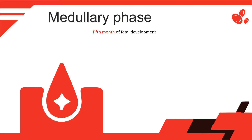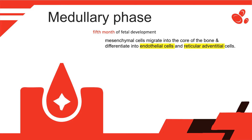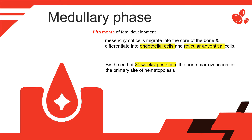Medullary Phase: Hematopoiesis begins in the bone marrow about the fifth month of fetal development. Hematopoietic stem cells and mesenchymal cells migrate into the core of the bone. The mesenchymal cells differentiate into structural elements such as endothelial cells and reticular adventitial cells that support the developing blood cells. By the end of 24 weeks gestation, the bone marrow becomes the primary site of hematopoiesis. Measurable levels of erythropoietin, granulocyte colony-stimulating factor, granulocyte-macrophage colony-stimulating factor, and hemoglobins F and A can be detected.